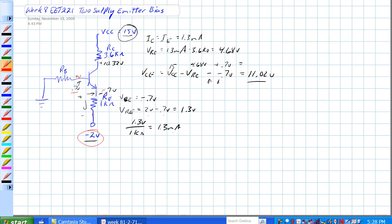And that means we have 1.3 milliamps in RE. So up here in collector current, if collector current and emitter current are the same or relatively close enough, we would have 1.3 milliamps here.